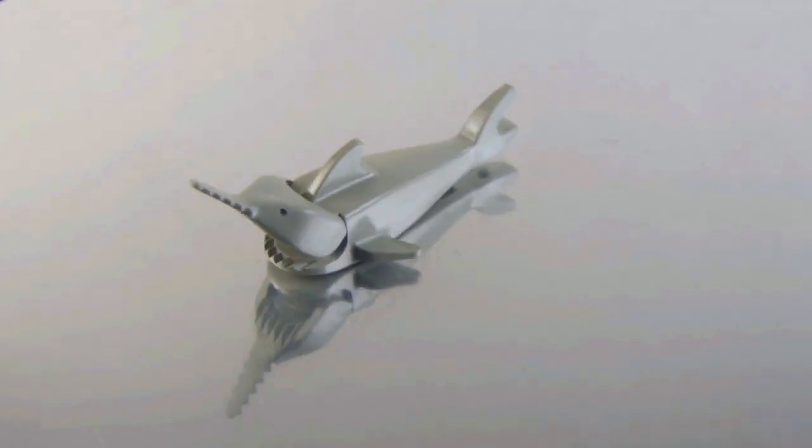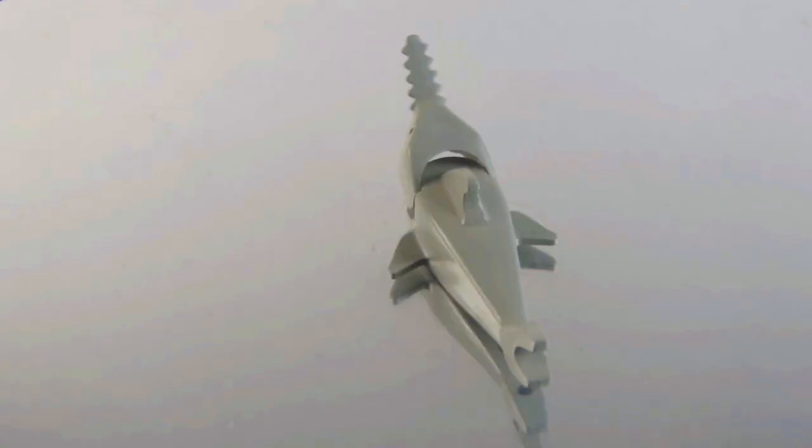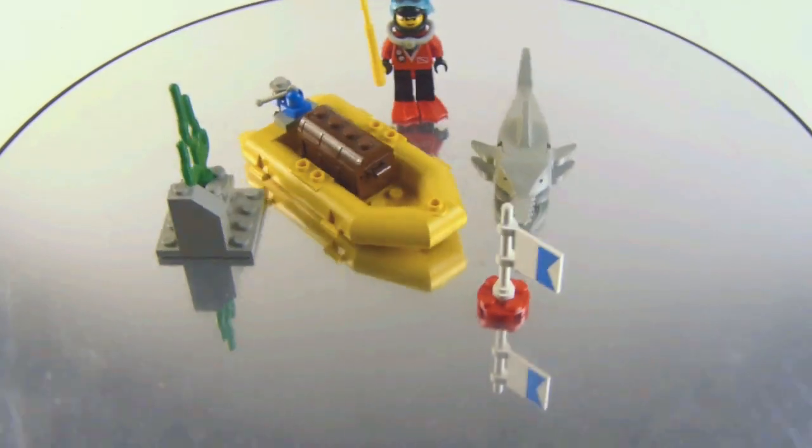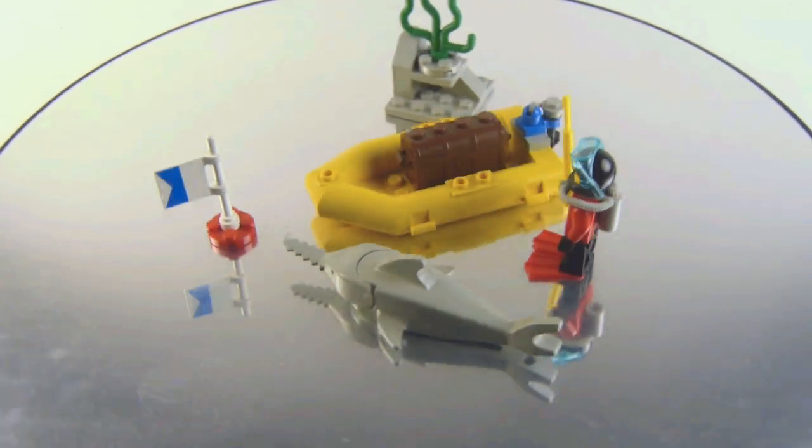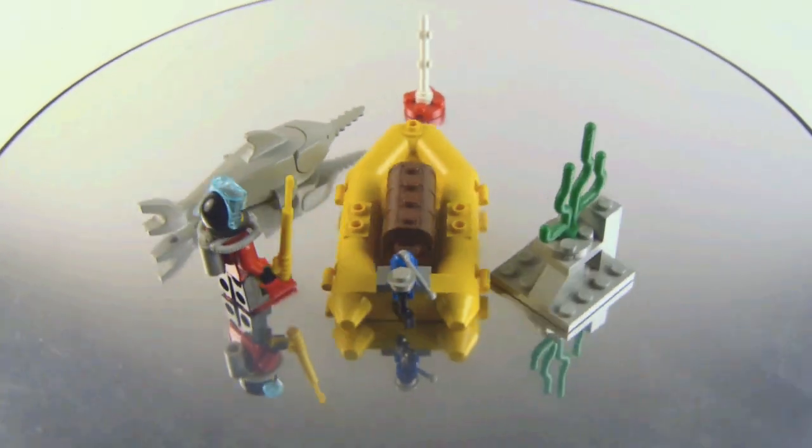Here's the close-up of the set. I'm giving you a full 360 look of the set. We get the dinghy, we get a printed flag there, and then we get this pile of rock with the coral right there.